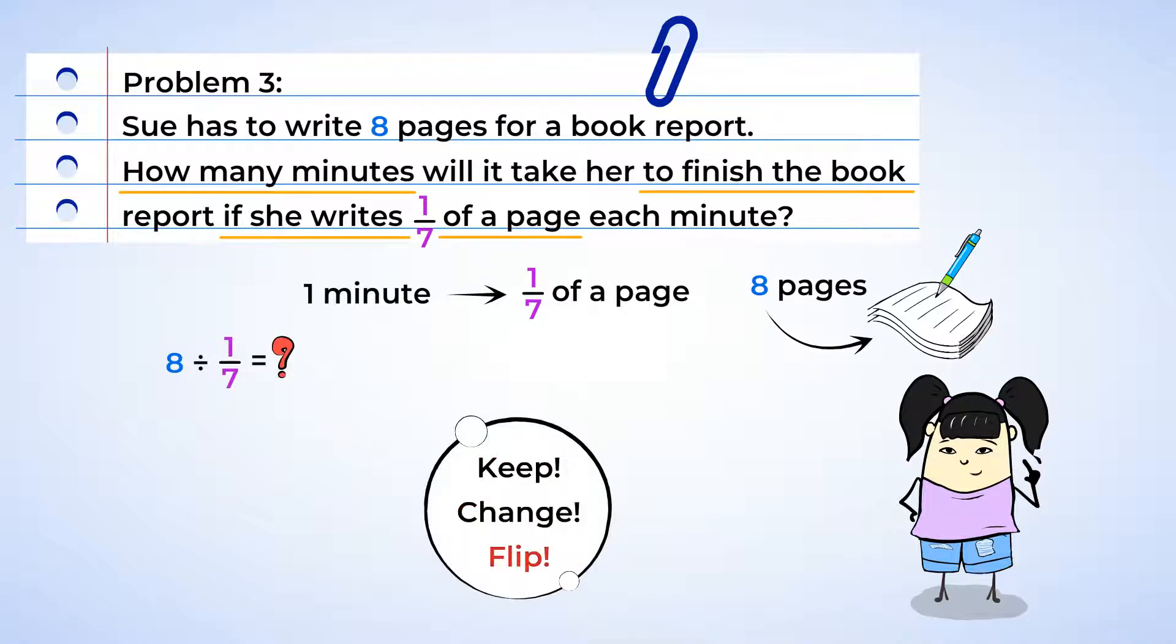And again, it's time to keep, change, and flip. We're going to keep the eight and change the division into multiplication. And next, we can flip the one-seventh into seven. And now we have eight multiplied by seven, and that is 56. Oh, cool. So it'll take Sue 56 minutes to write that eight-page book report. That is some excellent and speedy writing.